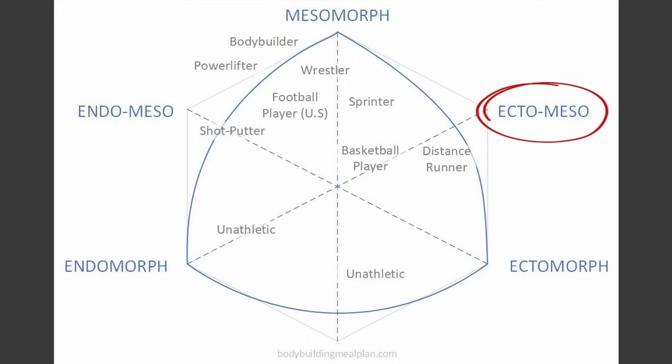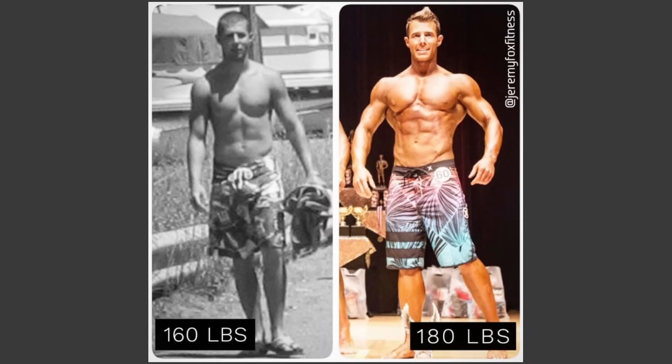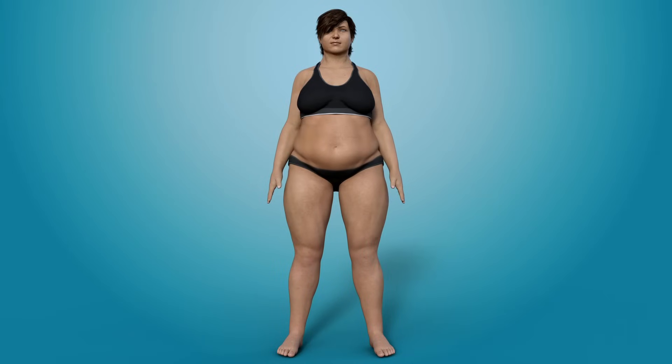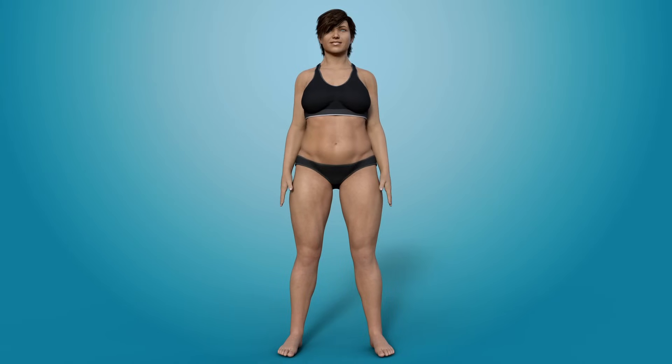Once I finally realized this, I modified my diet and exercise routine and gained 30 pounds the following year. On the other end of the spectrum, I've worked with many endomorph clients who could never lose weight or were stuck in a yo-yo diet cycle. When I helped them adjust for their metabolic type, they finally lost weight and kept it off.